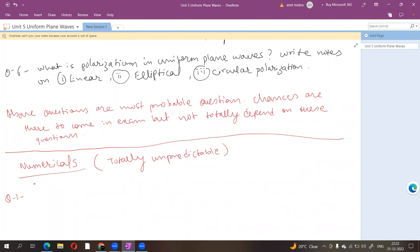For example, one question can be in this way. Like the electric field in free space is given by E is equal to 50 cos 10 raised to power 8t plus beta x, A y volt per meter.